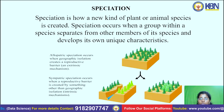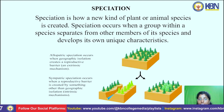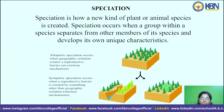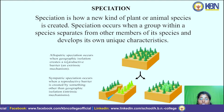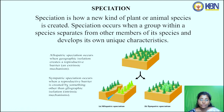Speciation is how a new kind of plant or animal species is created. It occurs when a group within a species separates from other members and develops its own unique characteristics. There are two types: allopatric and sympatric. Allopatric speciation occurs when geographical isolation creates a reproductive barrier — a barrier is formed between populations due to changes in the land. Sympatric speciation occurs when a reproductive barrier is created by something other than geographical isolation.